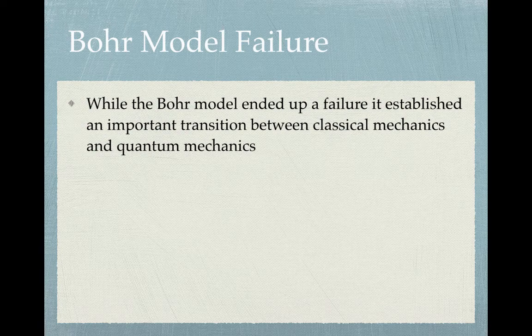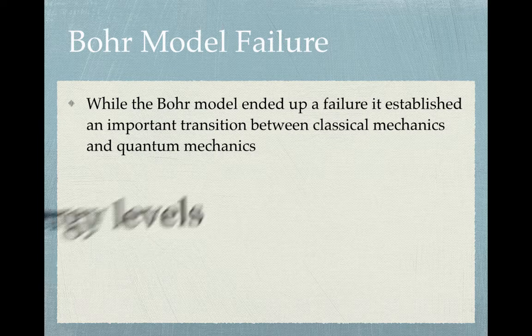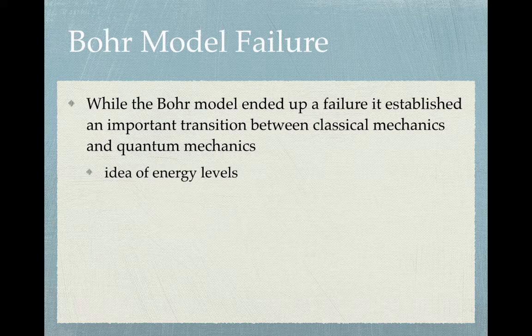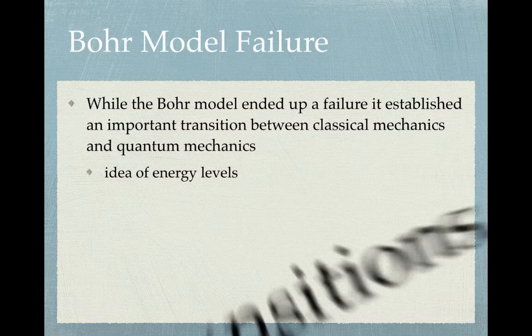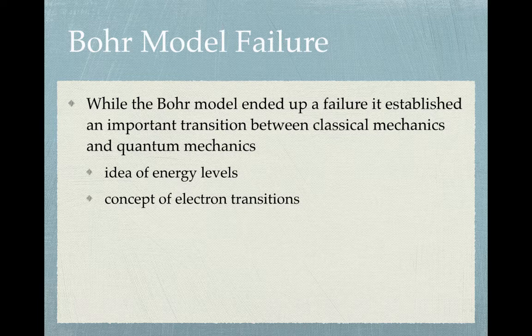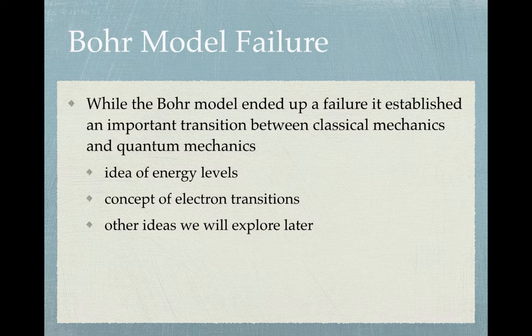The Bohr model did fail, but it made a very important transition between classical physics and quantum mechanics. It set up important ideas: the concept of energy levels, which we still incorporate into our existing models of the atom today, and the concept of electron transitions — electrons moving from one level to another, either absorbing or emitting energy — even though the model itself was wrong.